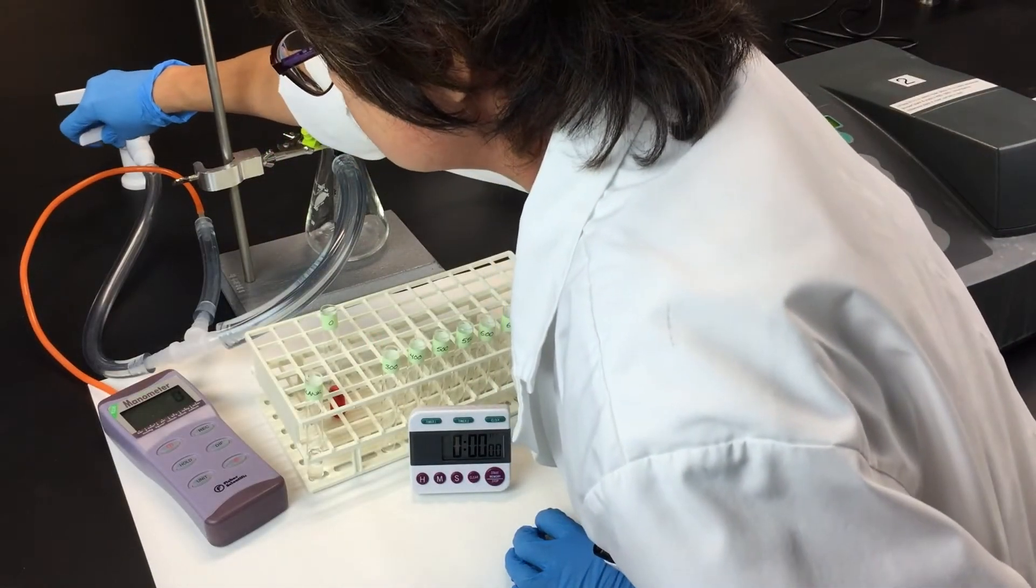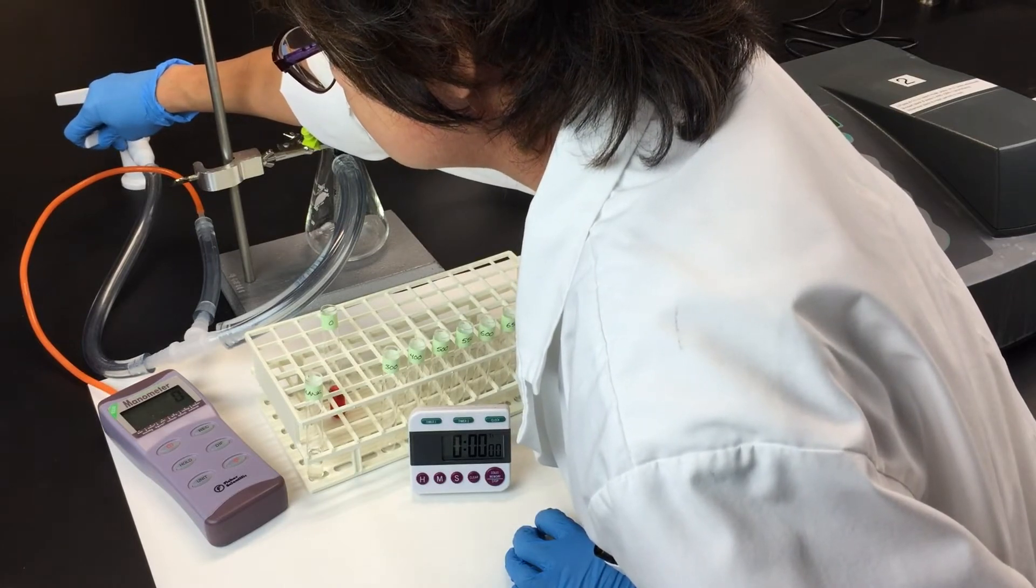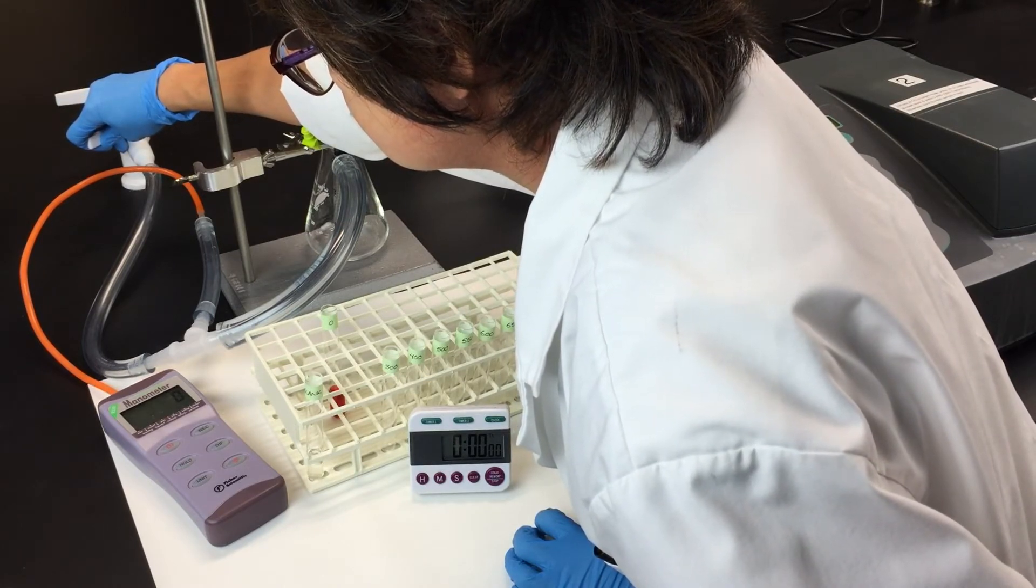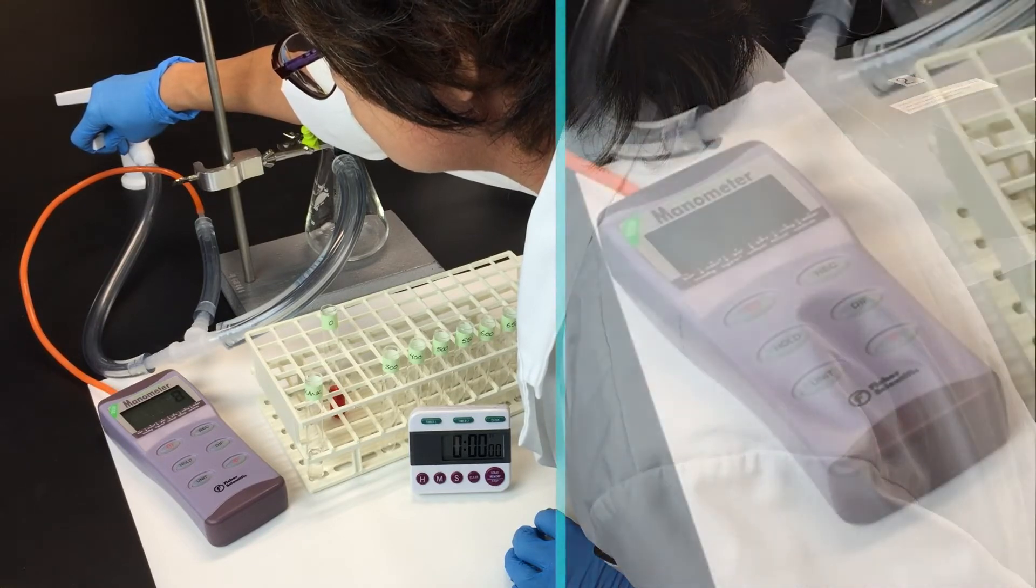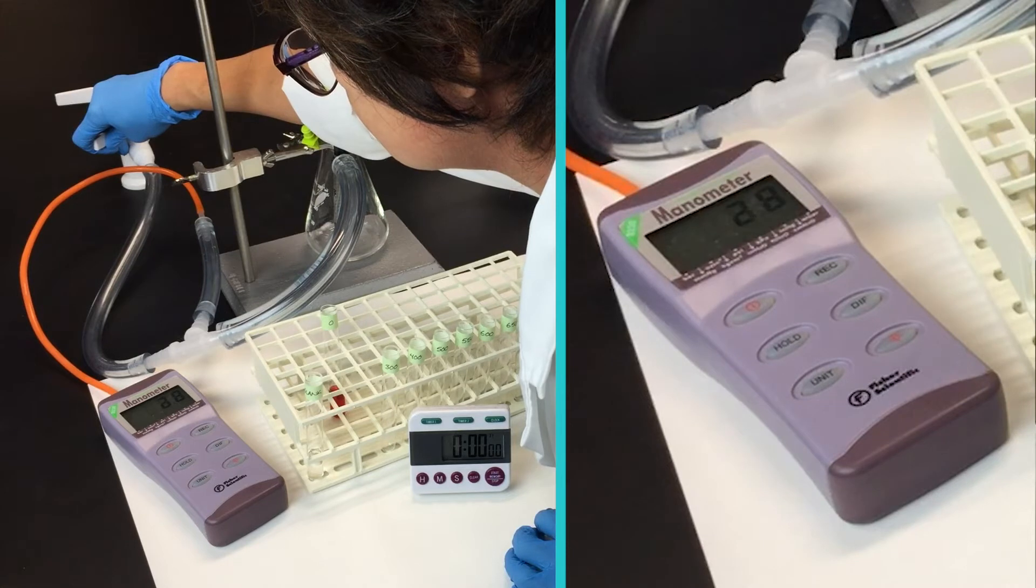Now slowly open the vacuum and increase it to 300 millimeters of mercury. You want to do this slowly and carefully because it's very easy to overshoot your target vacuum pressure.